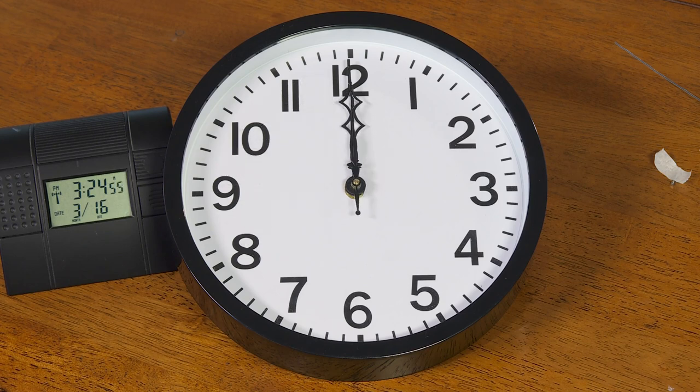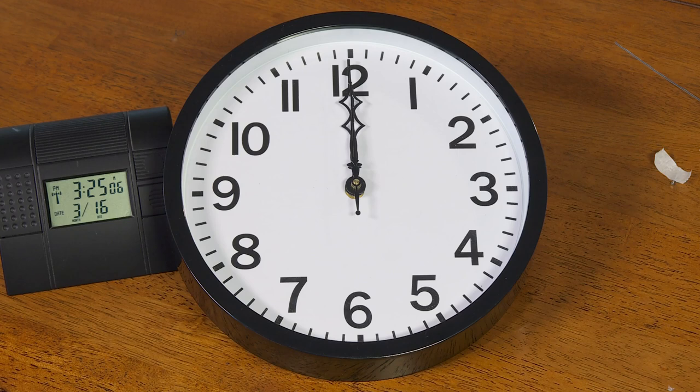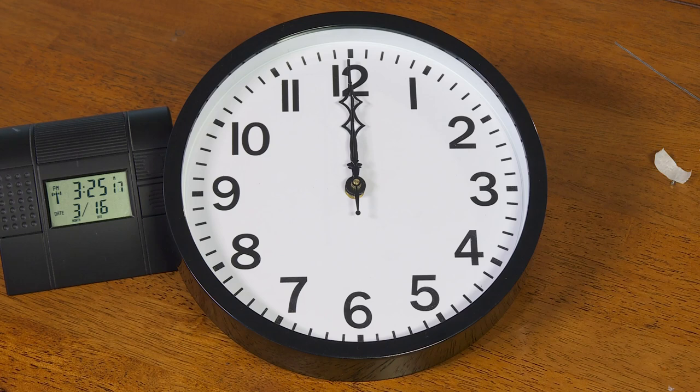Now that everything is lined up on the 12 o'clock position, it's going to start searching for the radio signal from WWVB and start processing the time data that it's going to receive. This will take just a few minutes. After it receives the information that it needs, the hands are going to spin around to the proper position. It will be completely synchronized with this little digital clock that's also a radio-controlled clock that I've got here next to it as a reference.